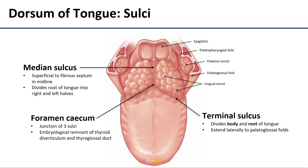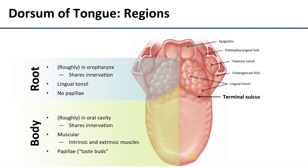Where all of these sulci meet up, there is a small depression called the foramen cecum. This makes for a nice little intersection point, but it's actually an embryological remnant left behind by the formation of the thyroid gland. We're going to use that terminal sulcus to divide the tongue up into the lingual root and the lingual body.